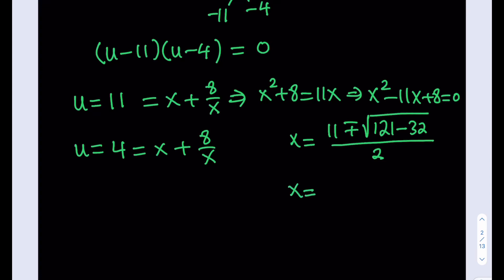So we're going to get two solutions from here. Here, 121 minus 32 is going to be 91, right? Well, actually, it's not 91, is it? It's actually going to be 89, isn't it? 121 minus 32, that's going to be 89. So we're going to get 11 plus minus the square root of 89, which is a prime number, by the way, divided by 2. That's going to be two of the solutions.